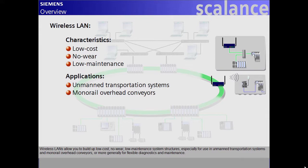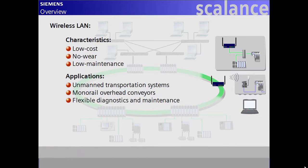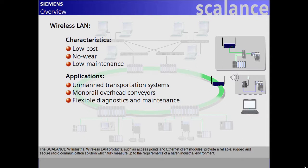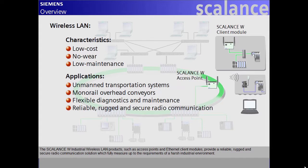especially for use in unmanned transportation systems and monorail overhead conveyors, or more generally for flexible diagnostics and maintenance. The Scalance W industrial wireless LAN products such as access points and Ethernet client modules provide a reliable, rugged and secure radio communication solution which fully measures up to the requirements of a harsh industrial environment.